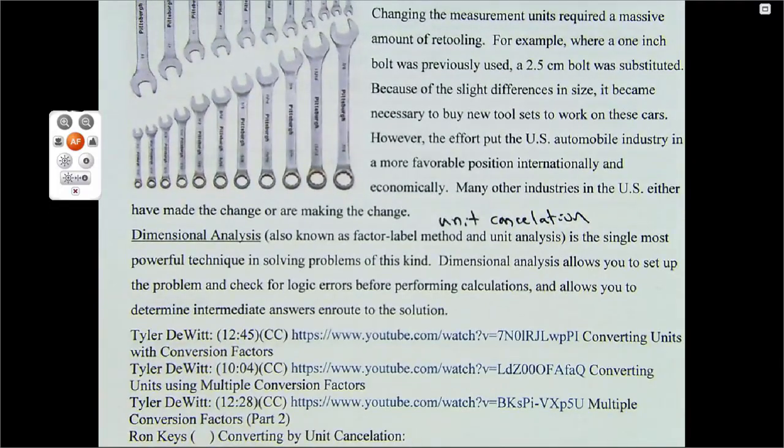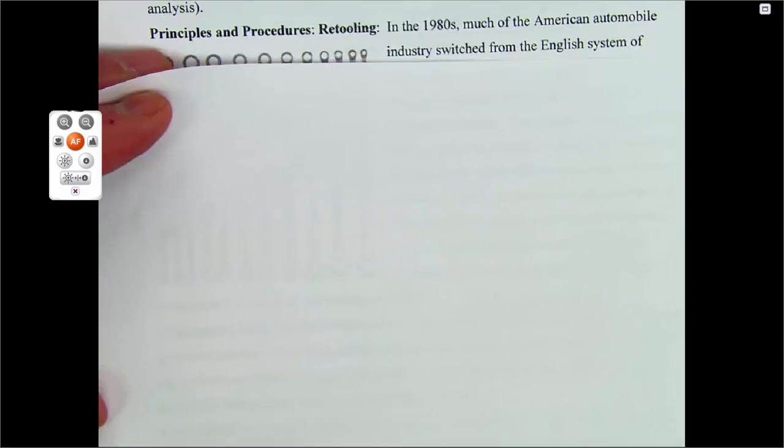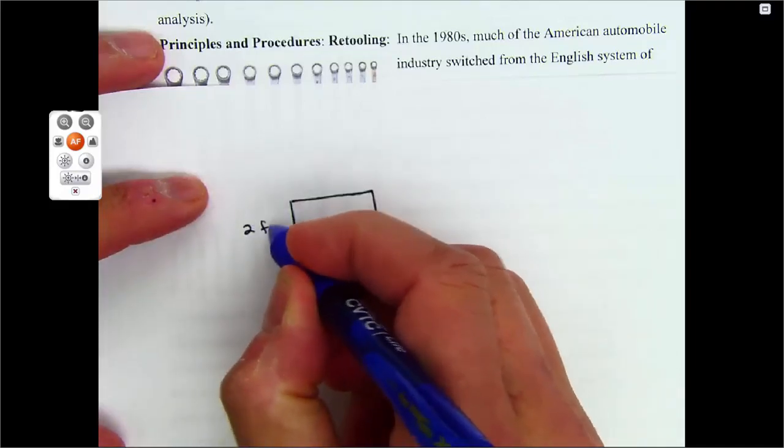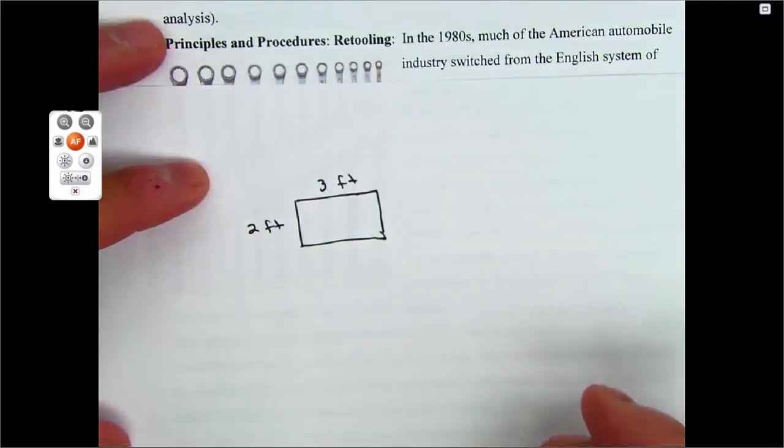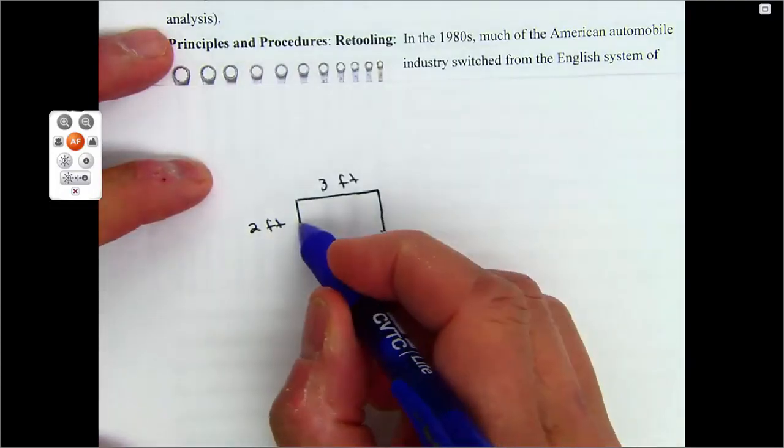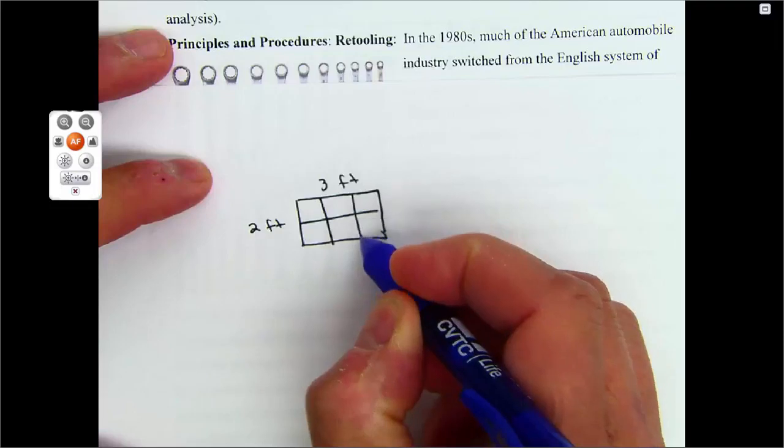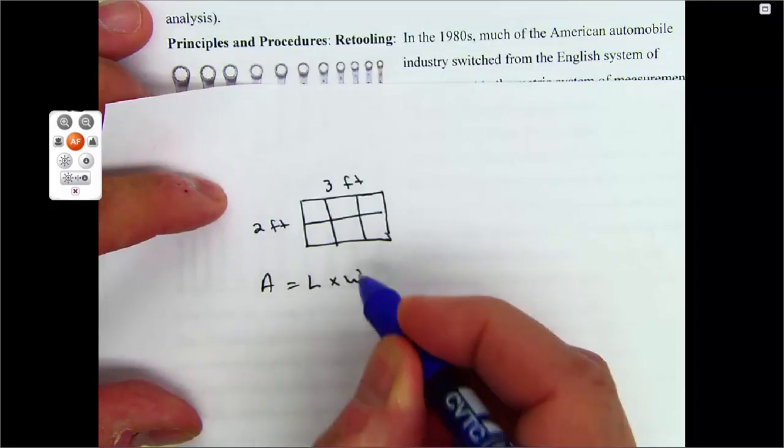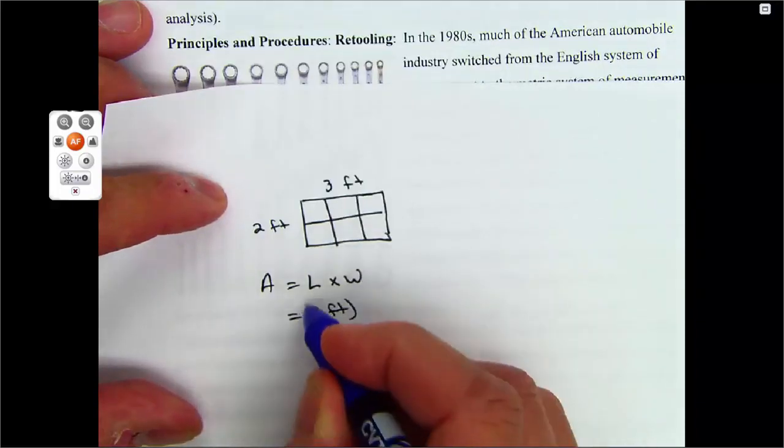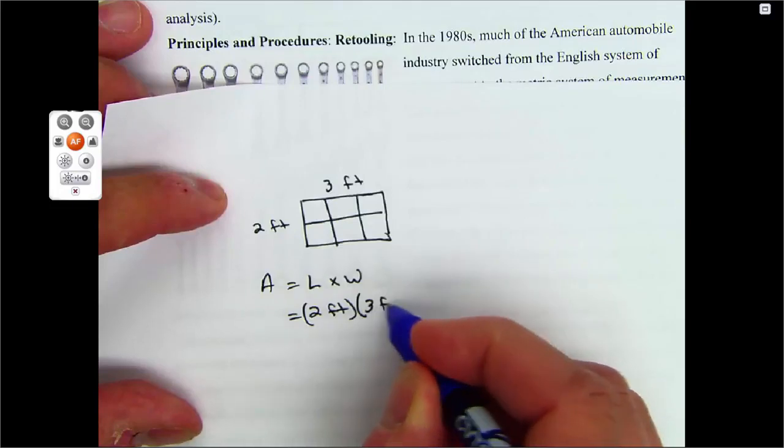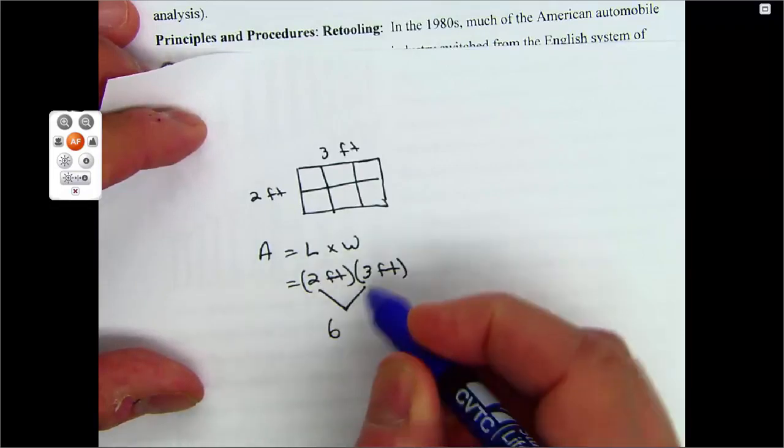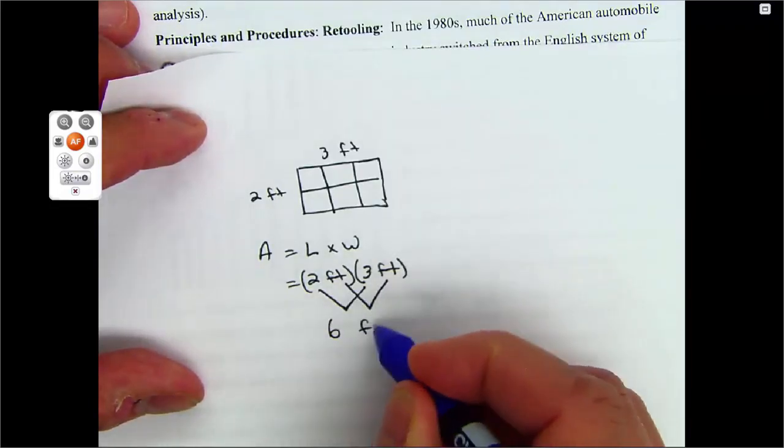Just to prove to you that this works, I propose this. If you have this rectangle, and this is two feet, and this is three feet, the area of this is six square feet, right? The area is the length times the width. Two times three is six, and feet times feet is feet squared.